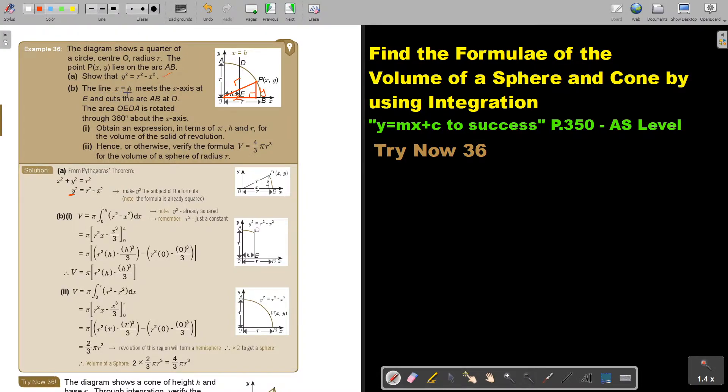Now the line x = h. This line here is cutting at the distance h on the x-axis, meets the x-axis at E and cuts the arc AB at D. The area AEDA is rotated through 360° about the x-axis. Obtain the expression in terms of π, h and R for the volume of the solid of revolution.